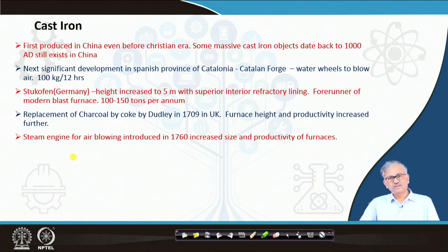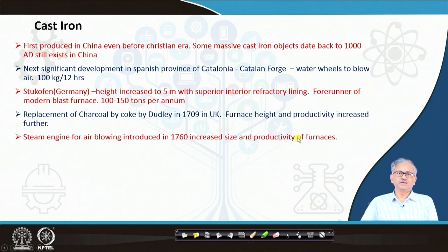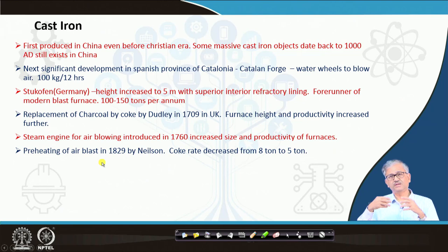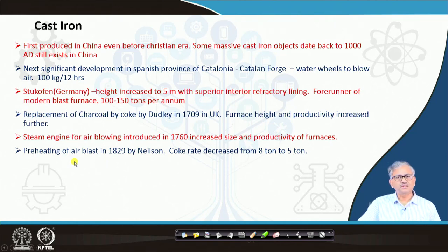Then came the steam engine for blowing the air. With an engine you have forced convection. Water wheels did not have so much power, but when you introduce a steam engine it has much more power, so you can deliver much more air per ton of iron — you can increase the blast rate. Steam engine air blowing was introduced in 1760, increasing the size and productivity of the furnace. You can supply more air, the blast rate increases, and you can burn more carbon per unit time — so productivity increased.